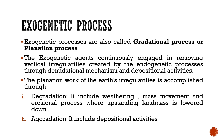Endogenic processes create vertical irregularities, which are modified through denudational mechanisms and depositional activities. The planation work of the earth is accomplished mainly through degradation and aggradation. Planation refers to a plane or level surface — it is a planation process, or gradation process, essentially the same meaning as gradation and degradation.